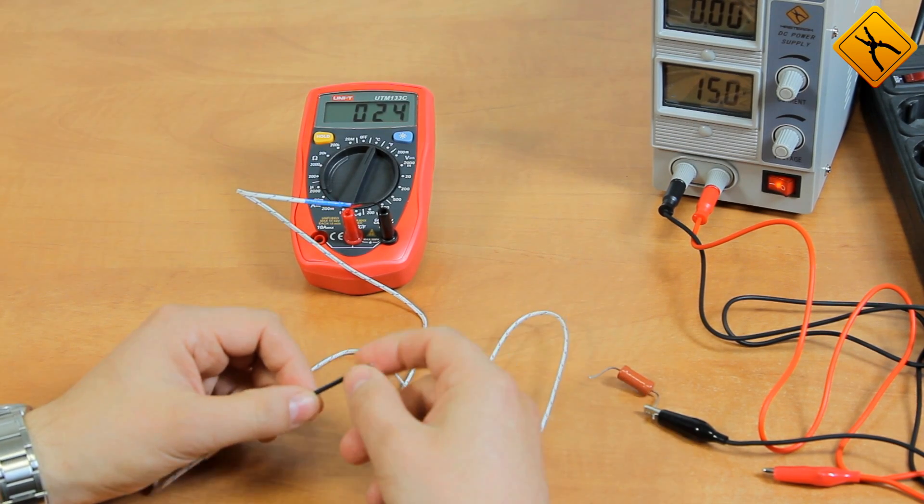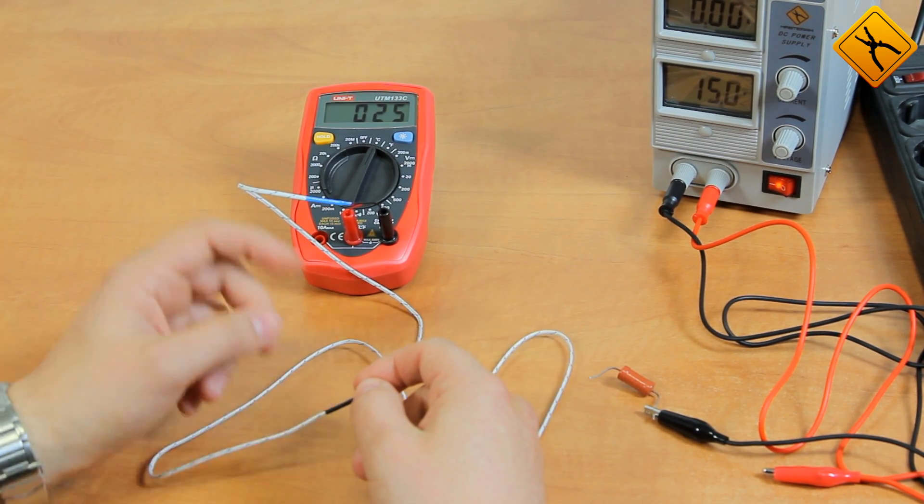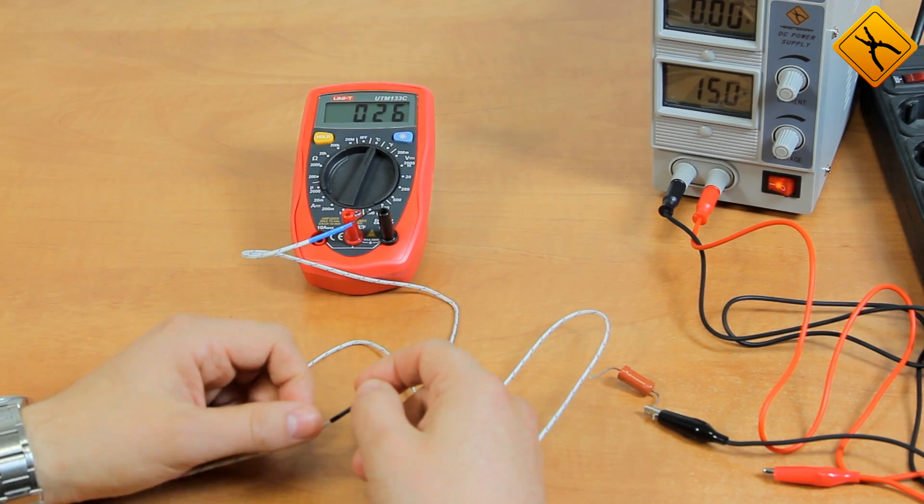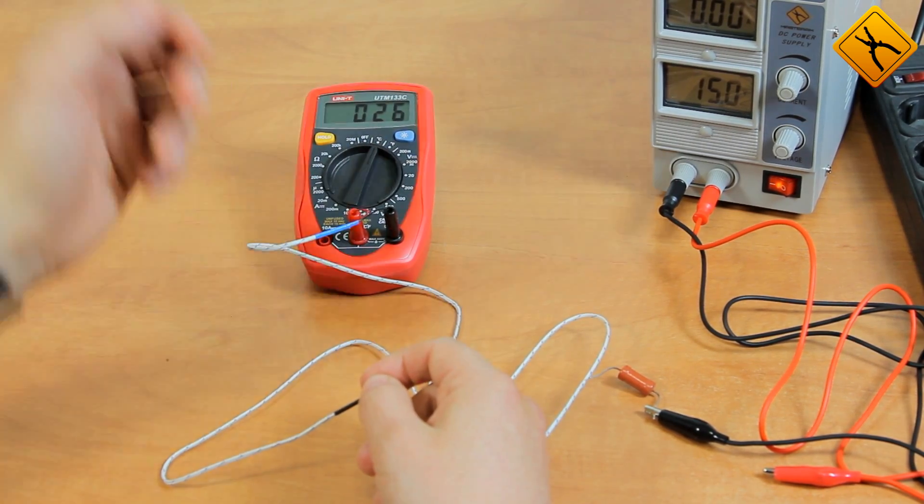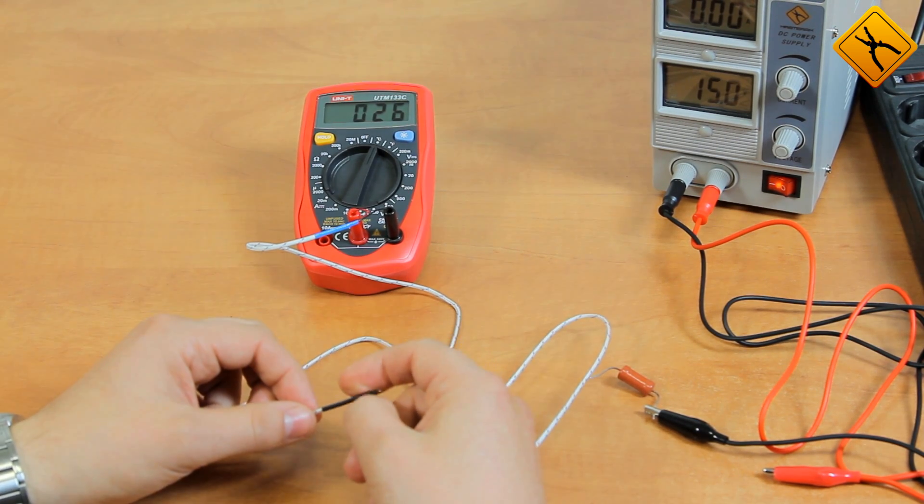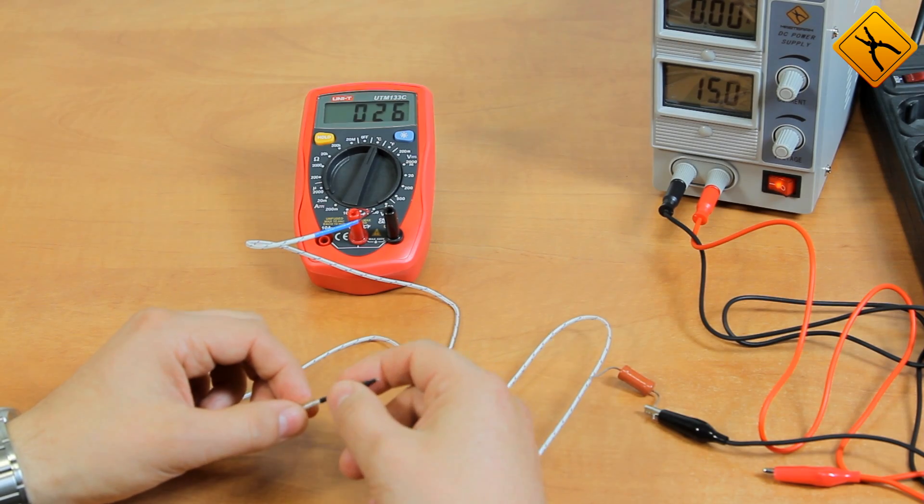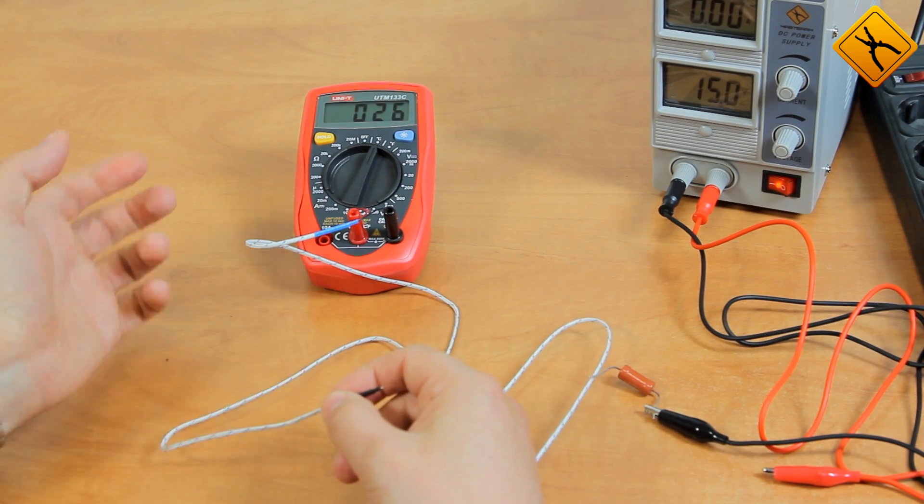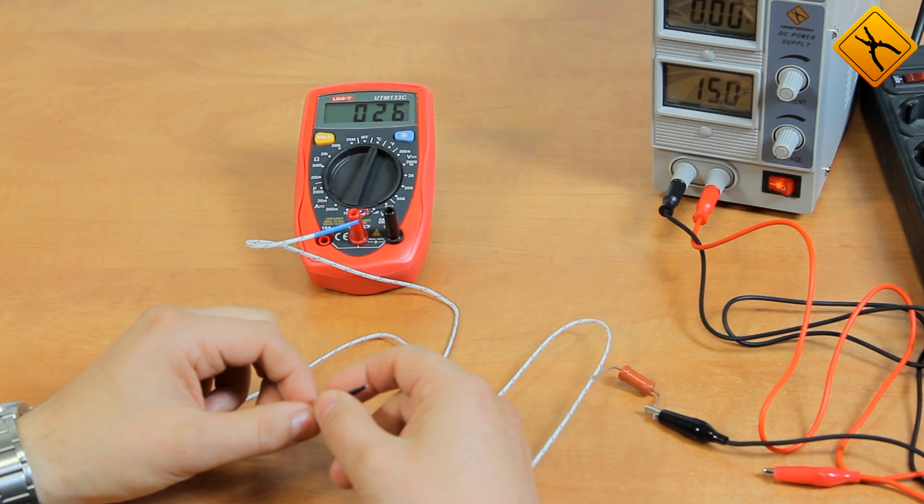There are also multimeters with more functions. Some models have auto range selection. In our case, I switch them manually. But auto switching is more convenient. However, such devices cost more. Besides, multimeters may be able to measure other values: AC current as well as capacity, inductance and frequency.